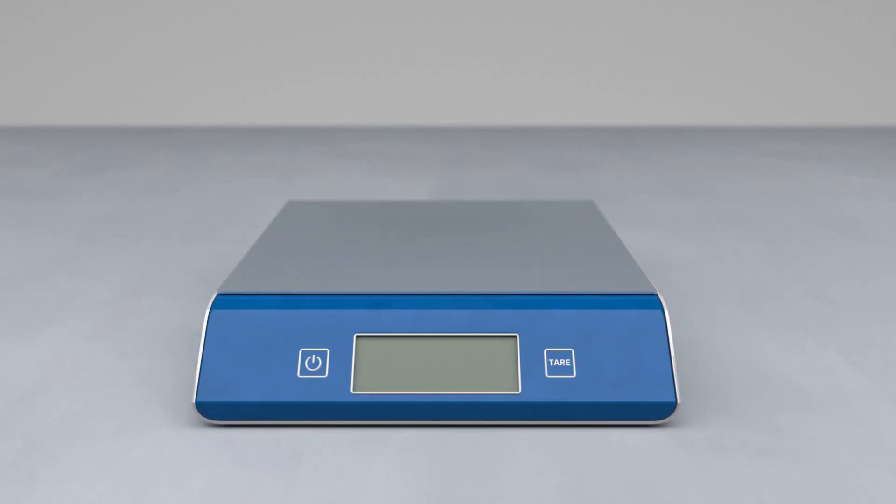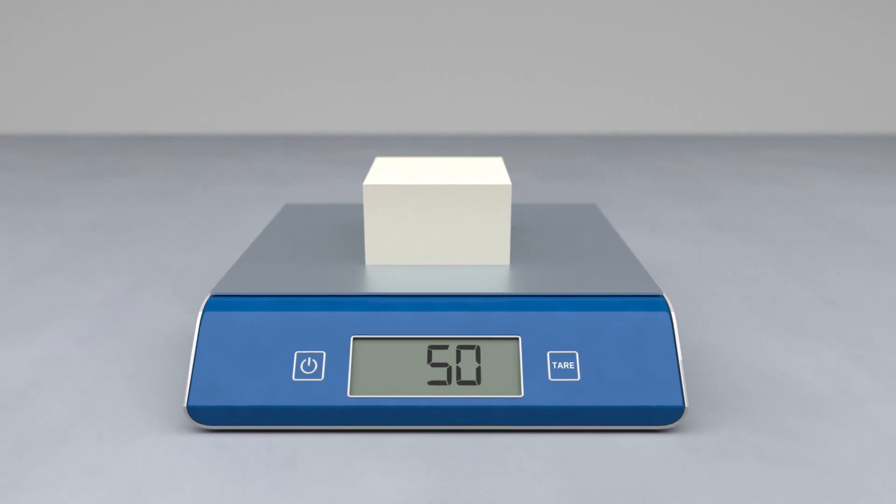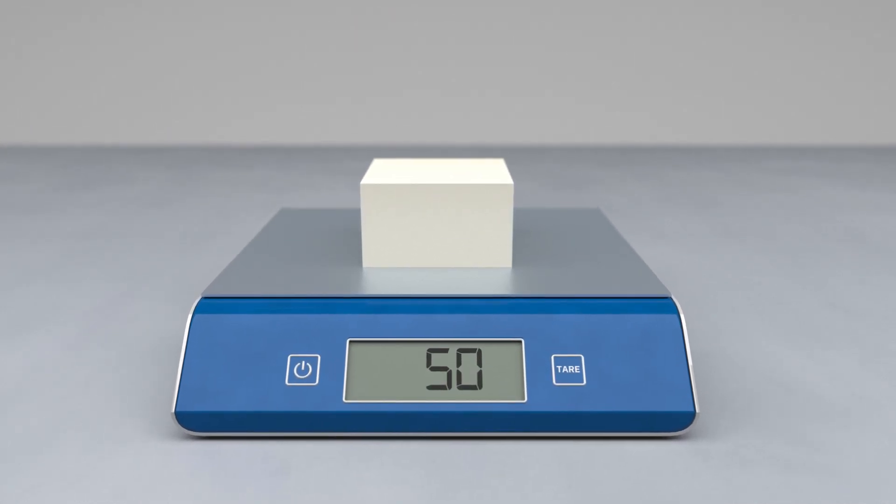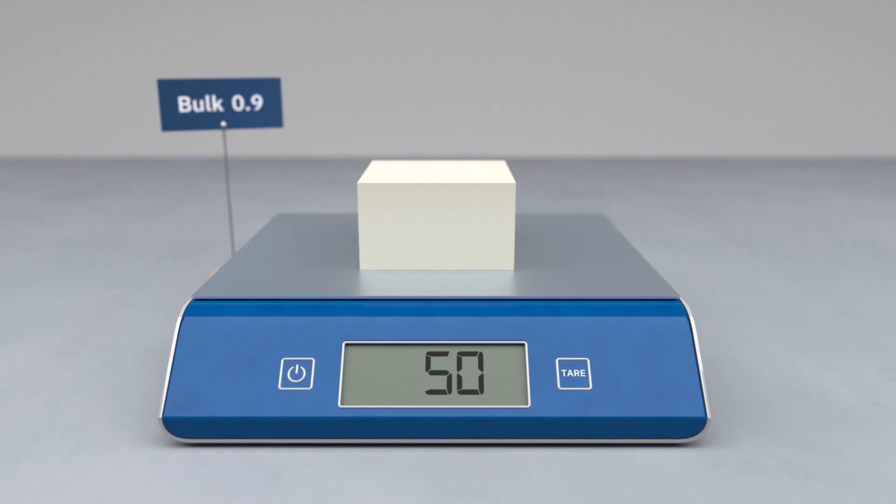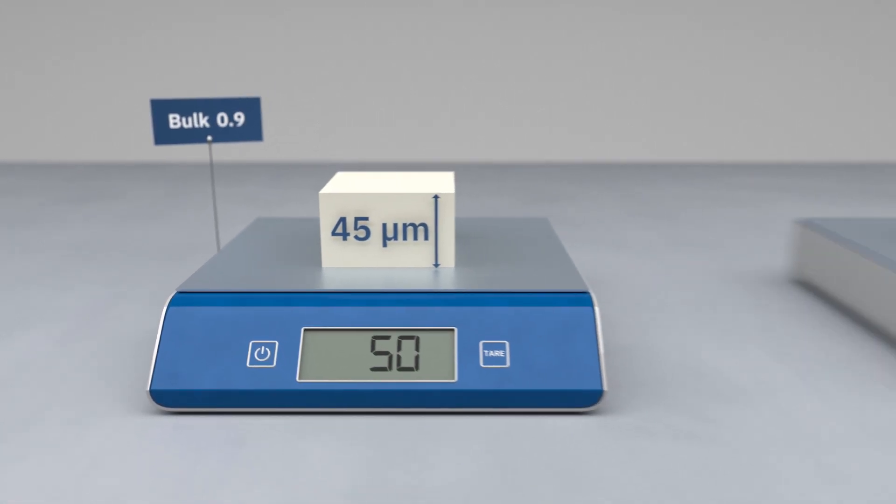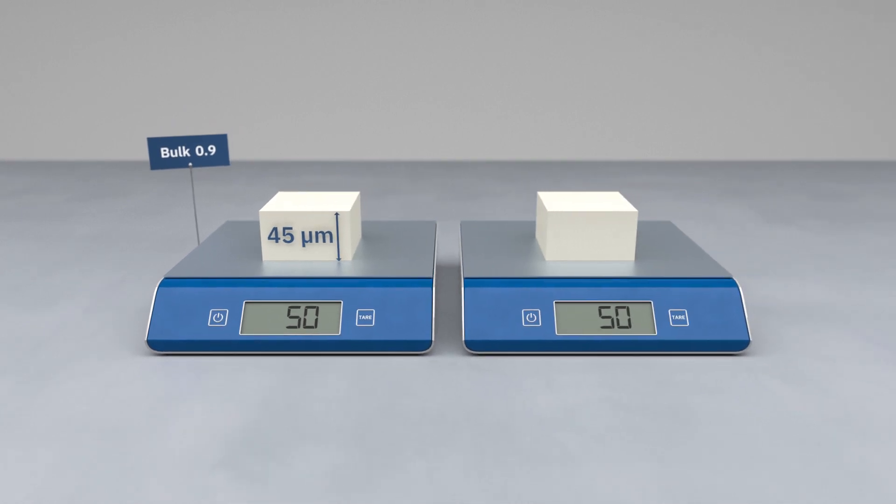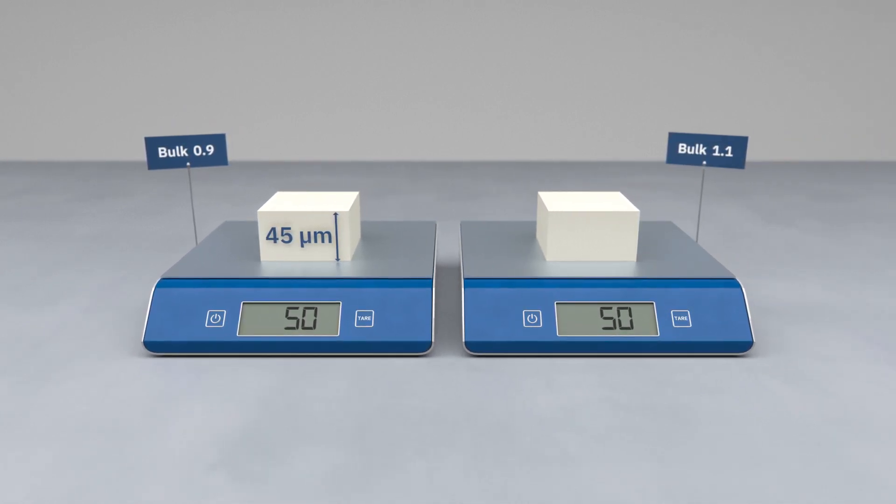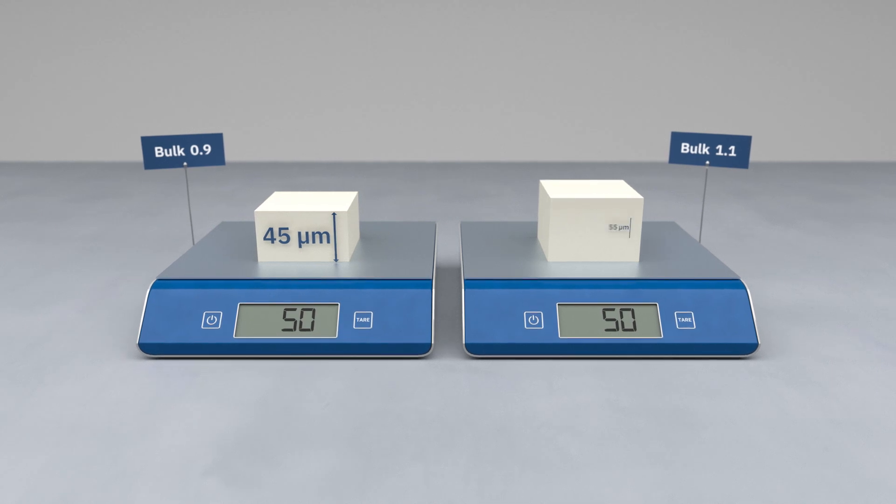Imagine that you have a sheet of paper that weighs 50 gram per square metre. This paper has a bulk of 0.9 and a caliper thickness of 45 micrometres. If you compare this paper with another paper of the same grammage, but with a bulk of 1.1, the caliper thickness will increase to 55 micrometres.